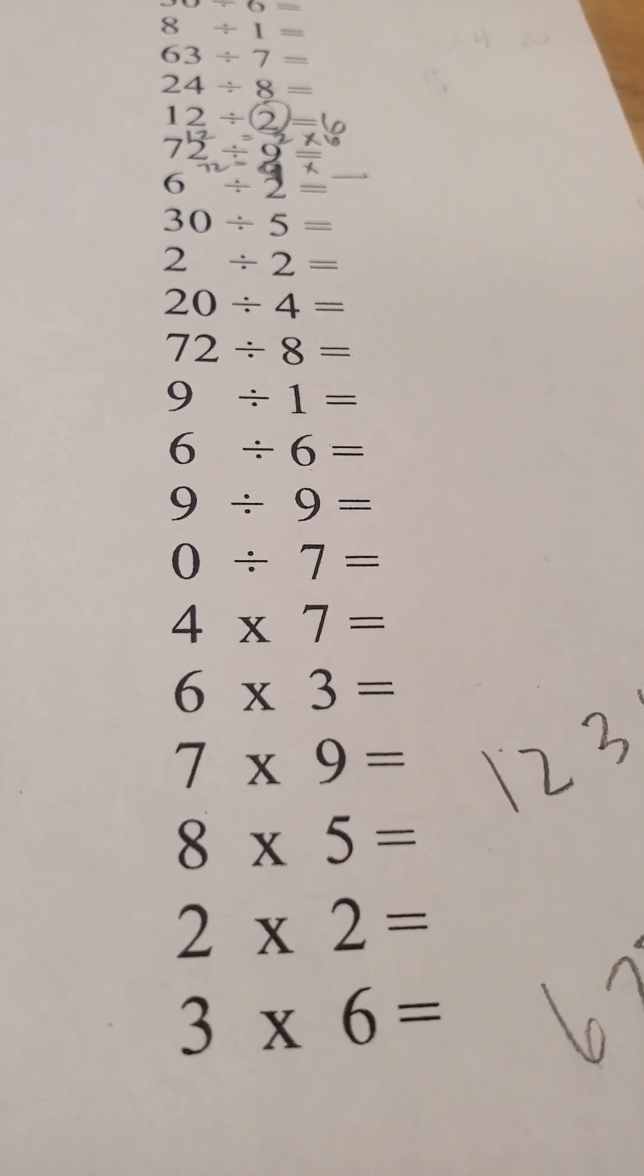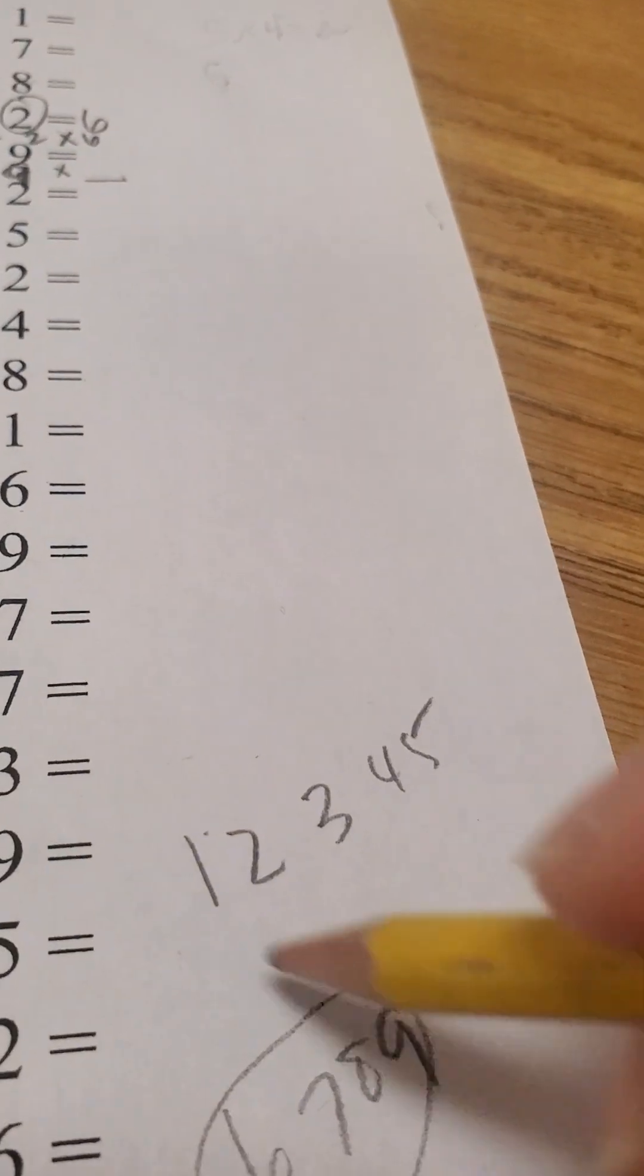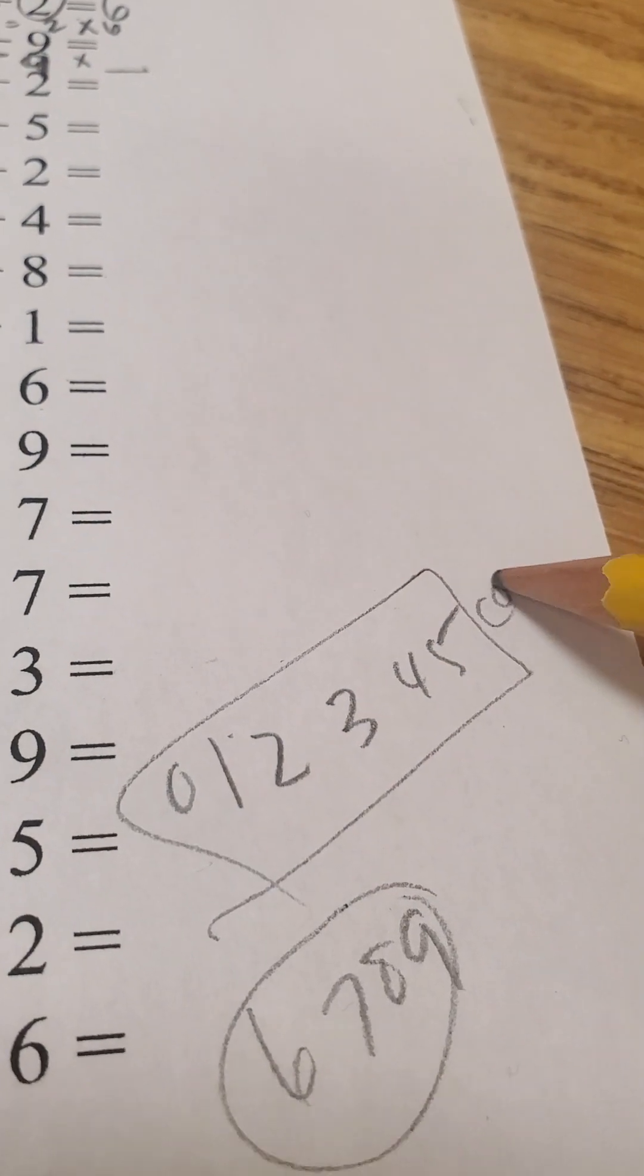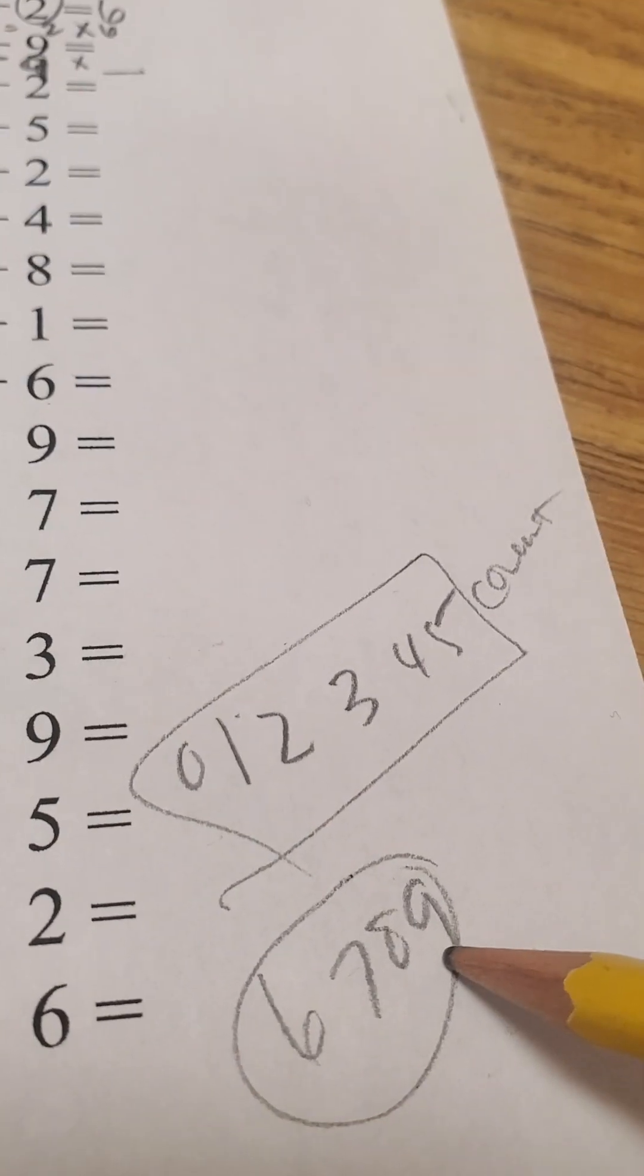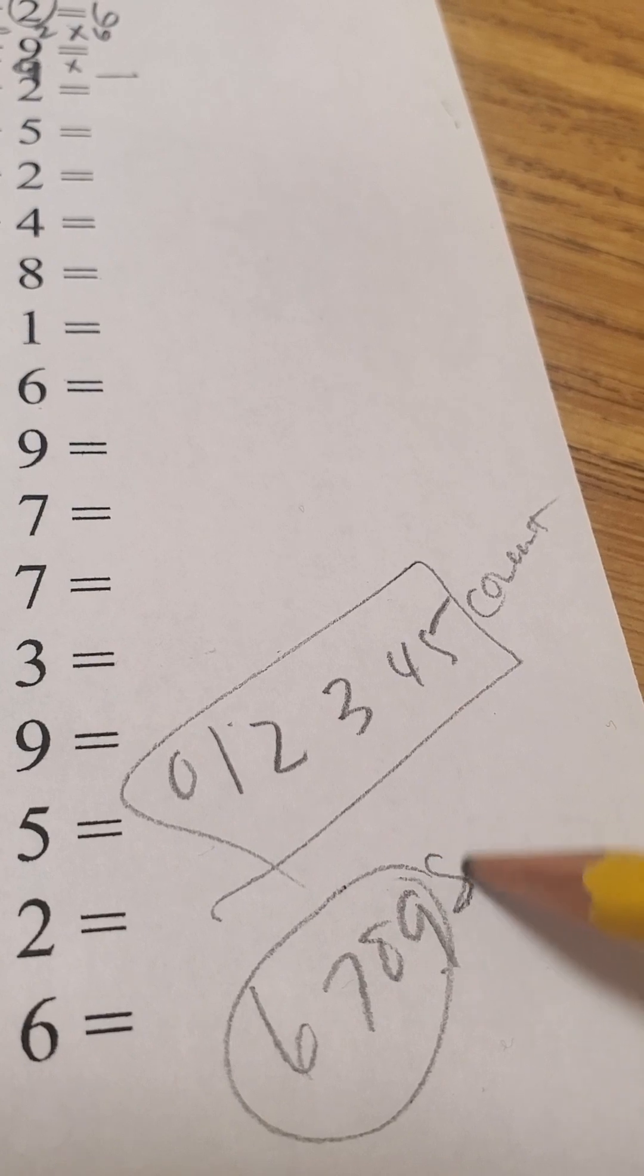6, 7, 8, 9. She can do, oh, and also 0's. She can do this by counting. And this one, the 6's, 7's, 8's, and 9's, she can do it with her sheet.